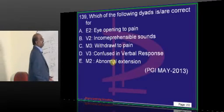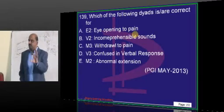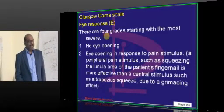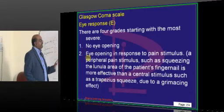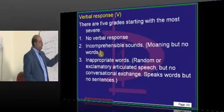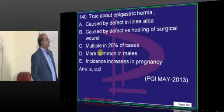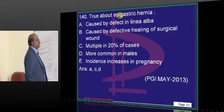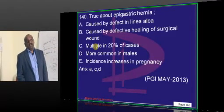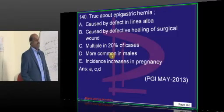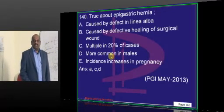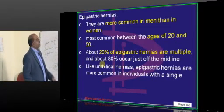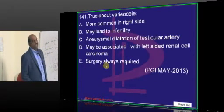One question is asked on Glasgow Coma Scale — also read MMSE (mini mental status examination). For eye response: no eye opening, eye opening to pain, eye opening to speech, eye opening spontaneously. Epigastric hernia is a defect in the linea alba. Multiple epigastric hernia points will be there in about one-fifth of cases, more common in males. Incidence increases in pregnancy; age group 20-50 years is most common.